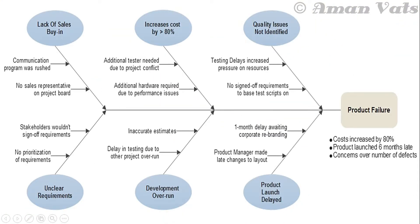For example, the problem is: product is getting failure, cost increased by 80 percent, product launches six months late, and there are a number of defects. For product failure, the first cause identified is quality issues. From a brainstorming session or five-why analysis: quality issues not identified, testing delays, increased pressure on resources, no sign-off requirement to base test scripts on. For increased cost by 80 percent: additional testers needed due to project conflict, and additional hardware required due to performance issues.